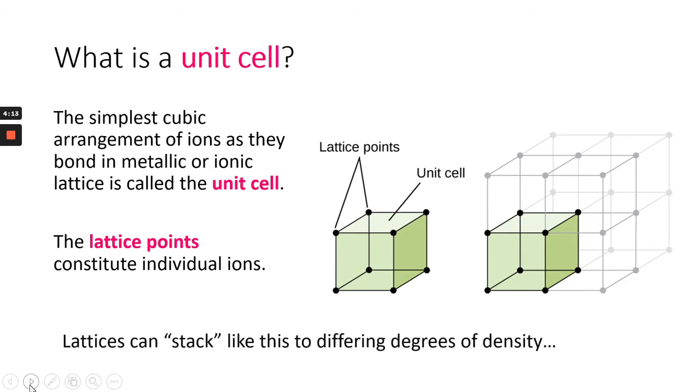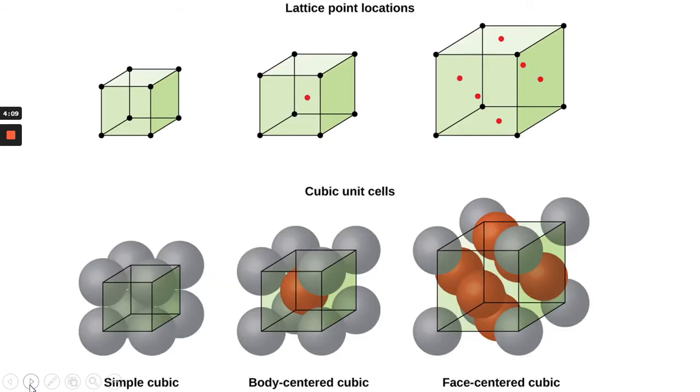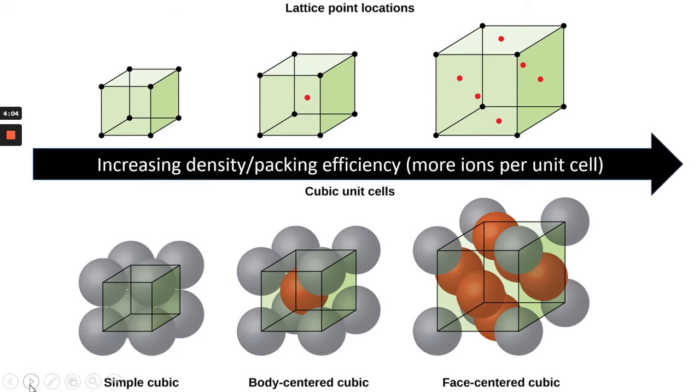And lattices can stack like this at different degrees of density. Looking at the lattice point locations, and then each one represents an ion, you can see that there's increasing density of packing efficiency as we go from simple cubic to body-centered cubic to face-centered cubic.